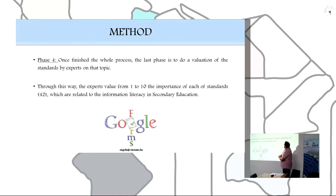Phase 4, the last phase, is to do an evaluation of the standards by experts on that topic. Through this way, the experts value from 1 to 10 the importance of each standard which are related with information literacy in secondary education.